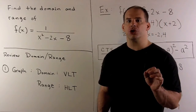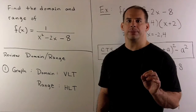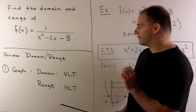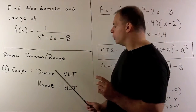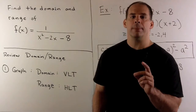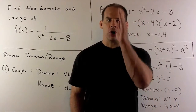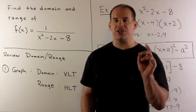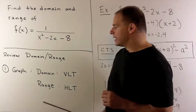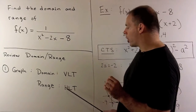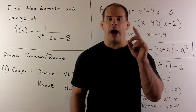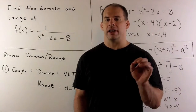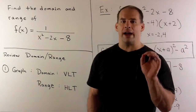Our first approach is to consider the graph of f(x). Recall, to find the domain and range from a graph, we have two tests. For the domain, we use a vertical line test — if I take any x on the x-axis and the vertical line through x intercepts our graph at any point, then x is in our domain. Likewise, to find the range, we apply the horizontal line test: if we take any y on the y-axis and the horizontal line through y intercepts our graph at any point, then y is in the range.